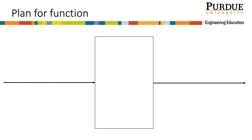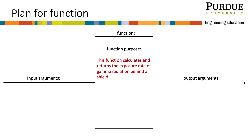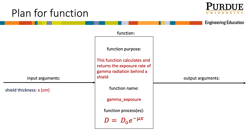Before we begin coding, let's plan our function using a function planning template. The input arguments needed are: shield thickness x in centimeters, the linear attenuation coefficient mu in centimeters to the negative one, and the exposure rate of the unshielded material d-naught in millirentgen per hour. The function itself will be called gamma_exposure, and it will calculate and return the output argument d — the exposure rate of the shielded material.